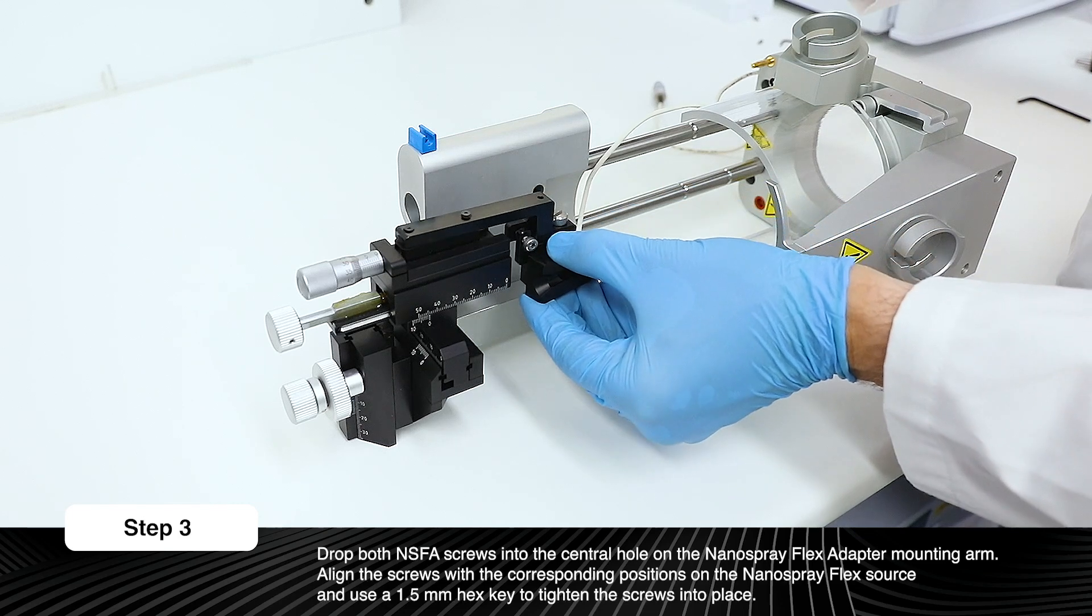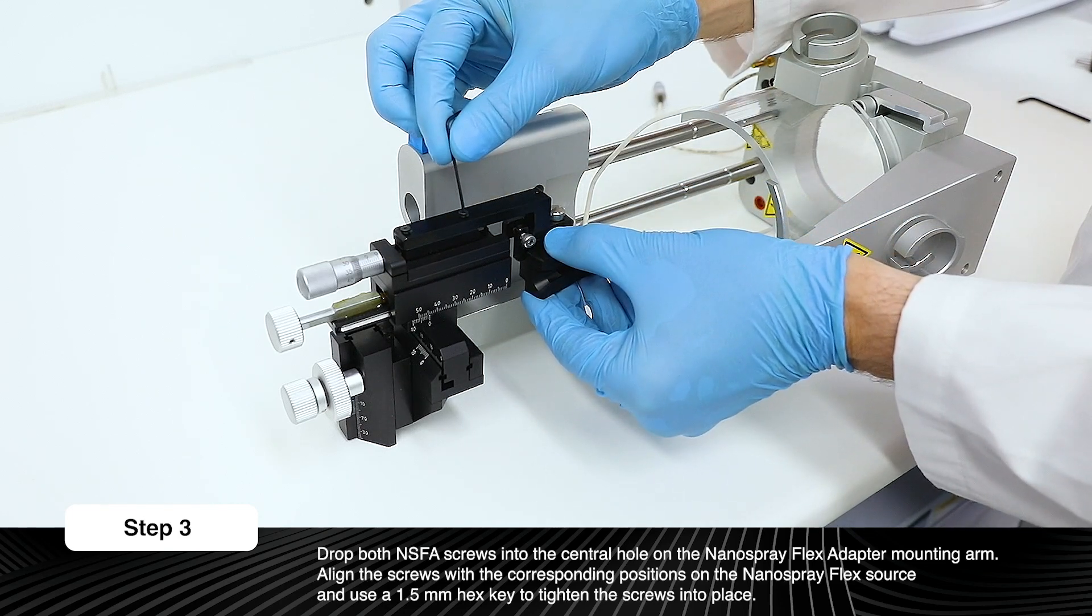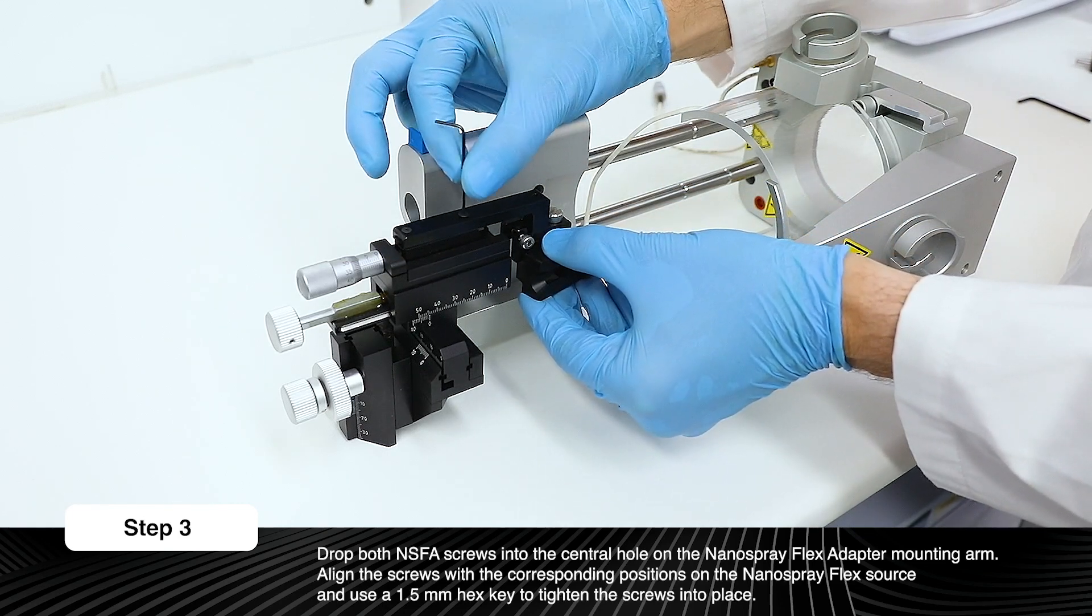Using gravity to hold the screws in place, drop both screws into the central holes of the Nanospray Flex Adapter mounting arm.